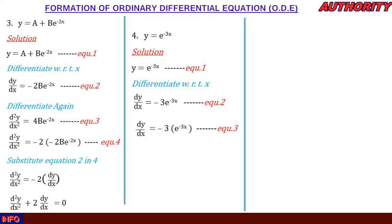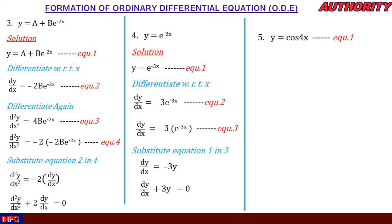Equation 3 and equation 1 are closely related. Since y = e^(-3x) from equation 1, we replace e^(-3x) with y, giving dy/dx = −3y. Taking −3y to the other side: dy/dx + 3y = 0. This is the differential equation.